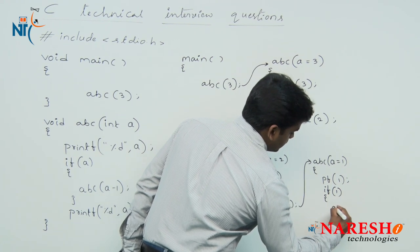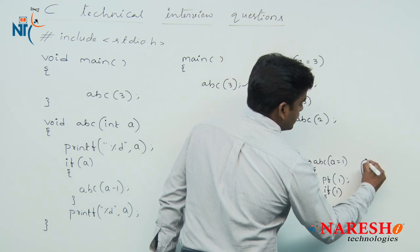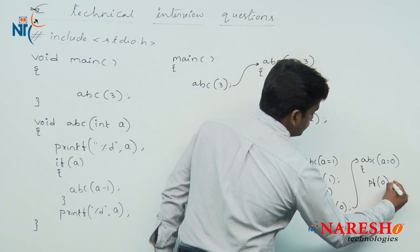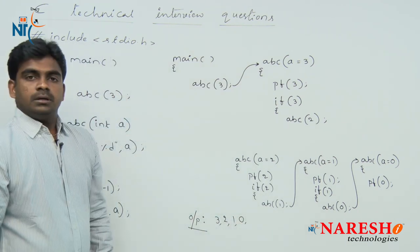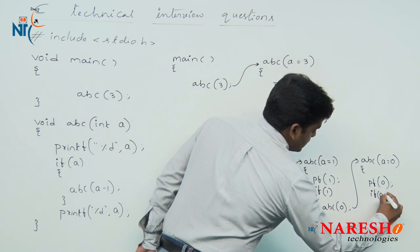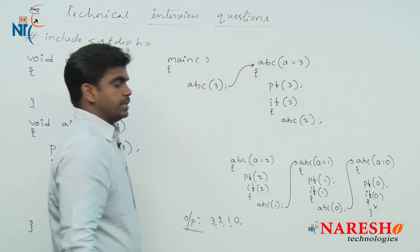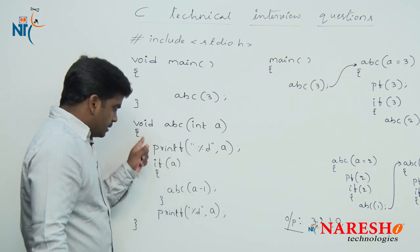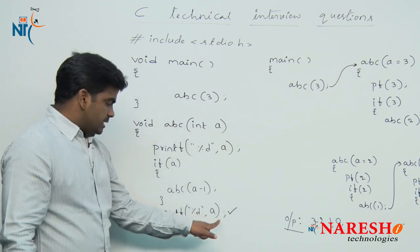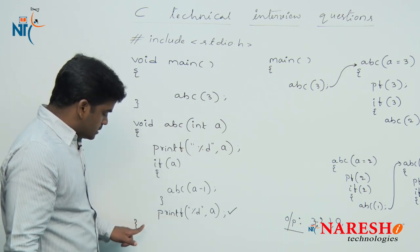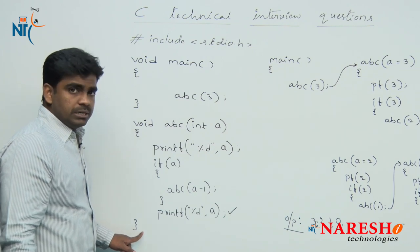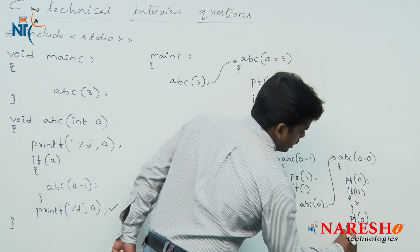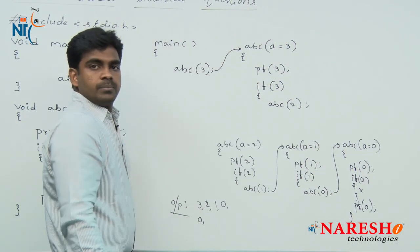Then it checks: if a is 1, we call abc(1 minus 1), which is 0. So abc executes again with a equals 0. Printf prints the value 0, so 0 is printed. Now look at this — if 0, the condition has failed, so the if block will not execute. Whenever the if condition fails, the if block is terminated. But there is a last statement — printing the value of a — so it prints 0 again.